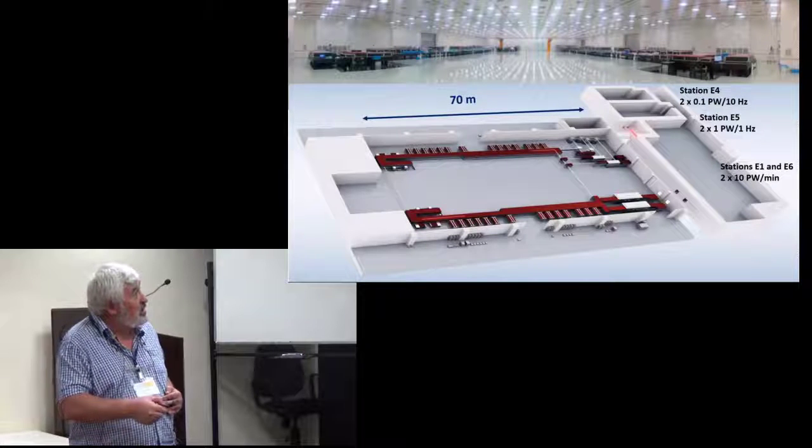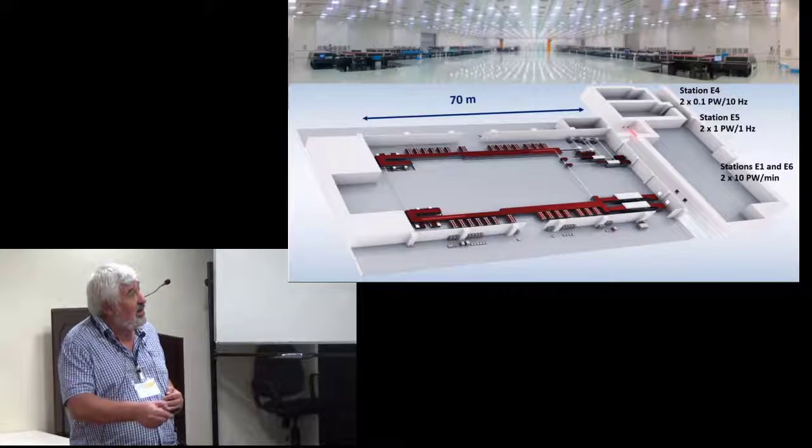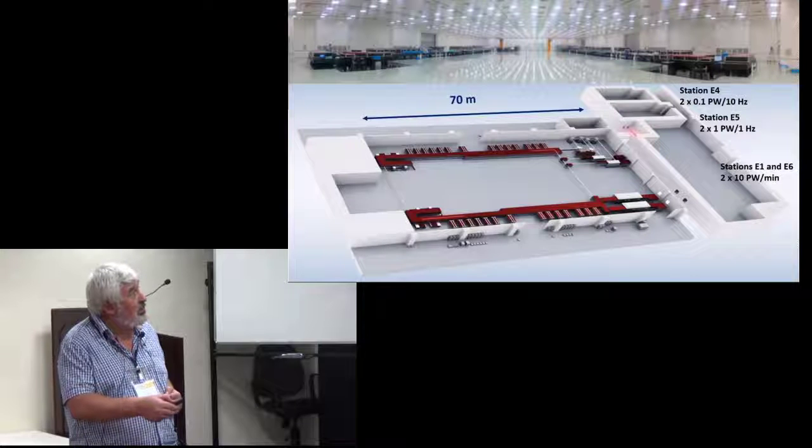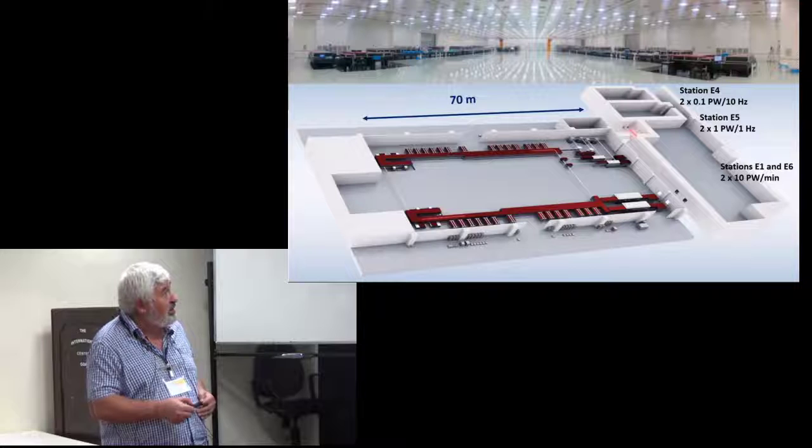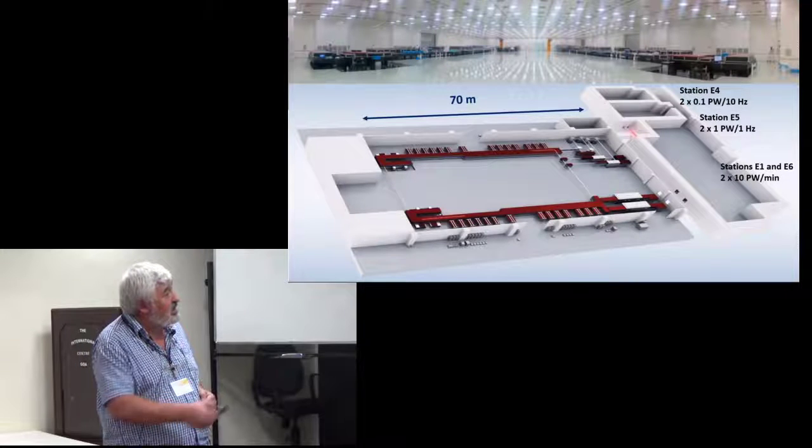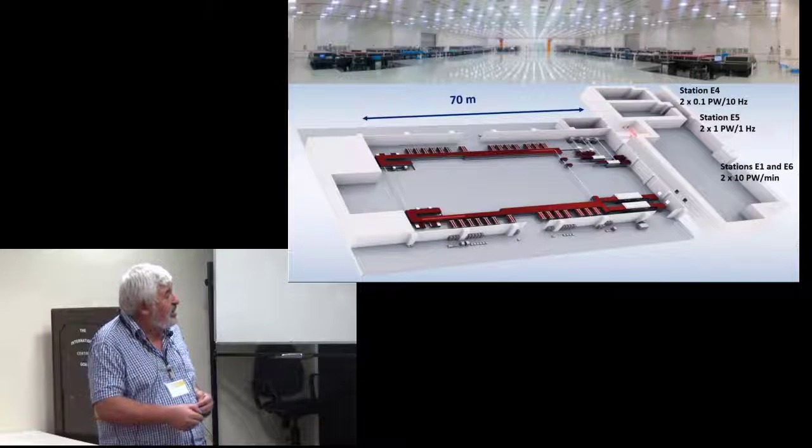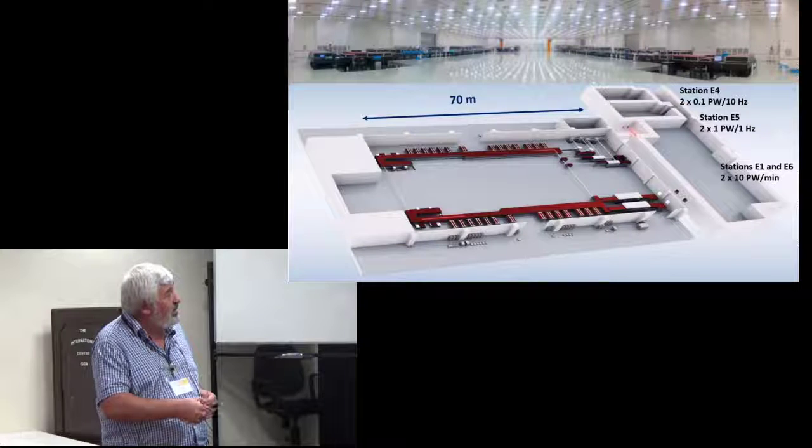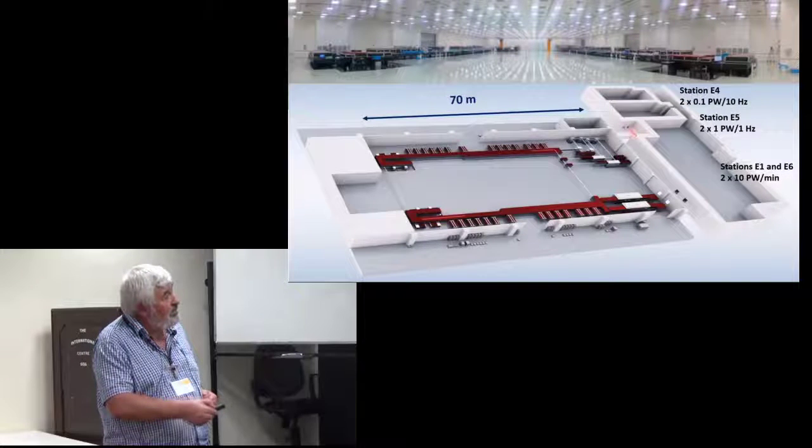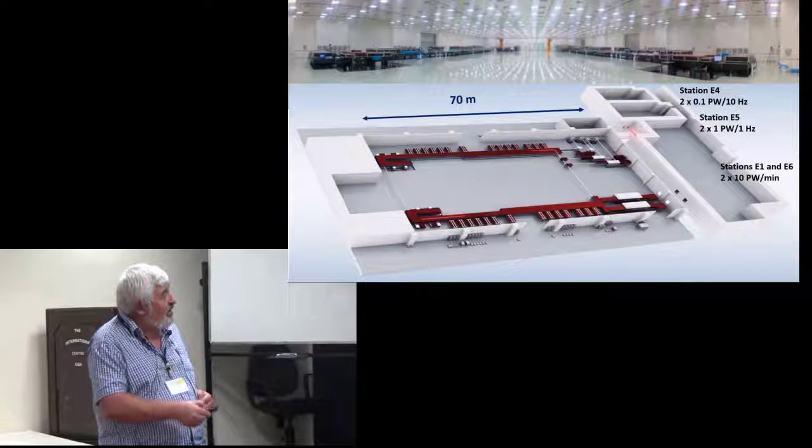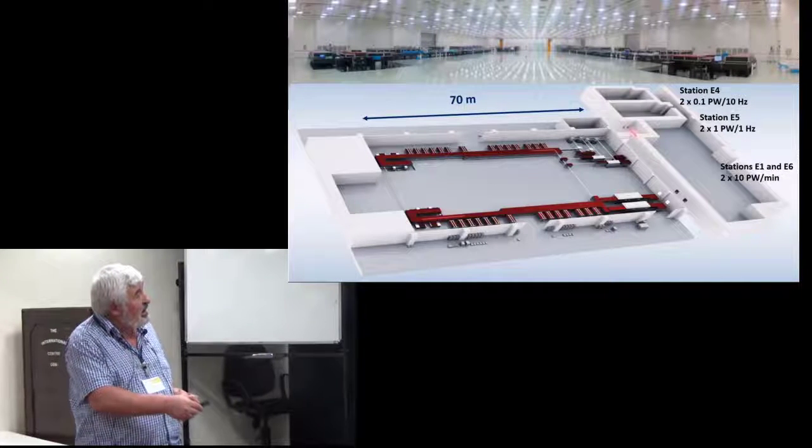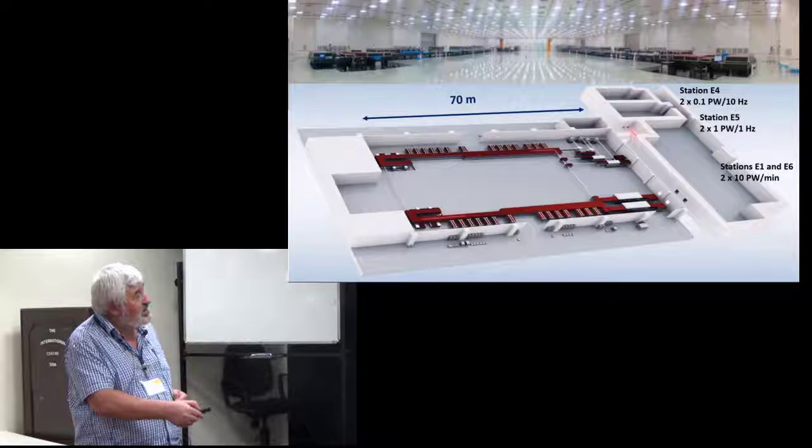This is what you can see nowadays in the laser room. The two arms are fully mounted. At the end you can see the 10 petawatt compressors. On the diagram this is 70 meters long. They have both a common front end and here are the pumping lasers.